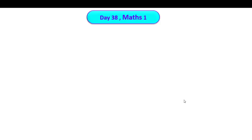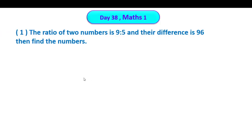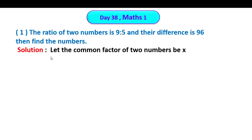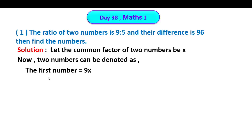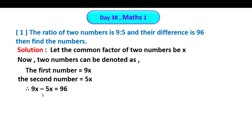Maths 1 exercise: The ratio of 2 numbers is 9 is to 5 and their difference is 96, then find the numbers. Solution: Let the common factor of 2 numbers be x. The first number is 9x and the second number is 5x. The difference of 2 numbers is 96, therefore 9x minus 5x is equal to 96.